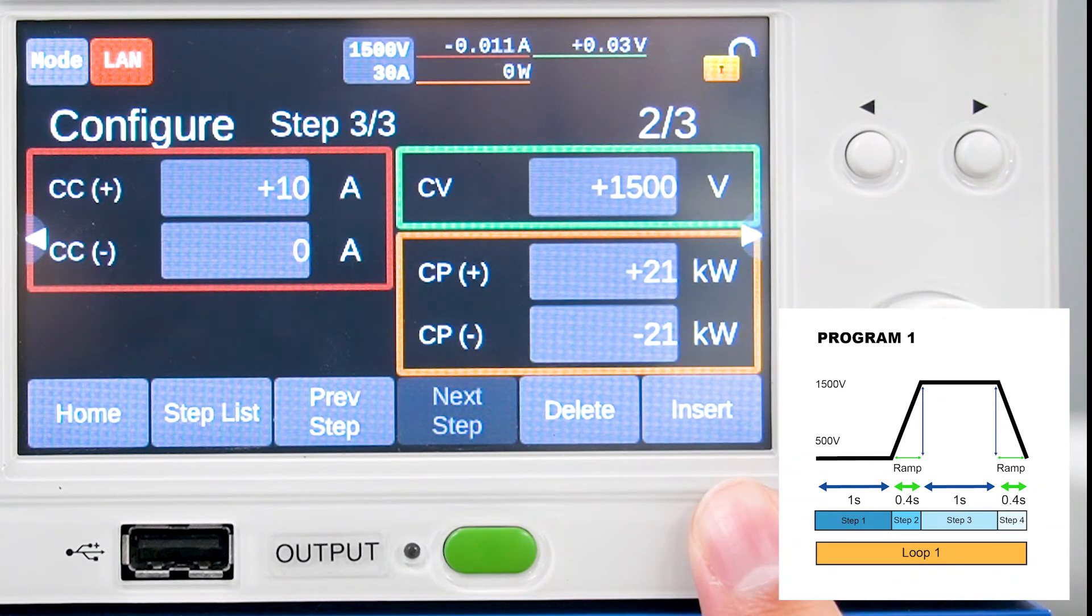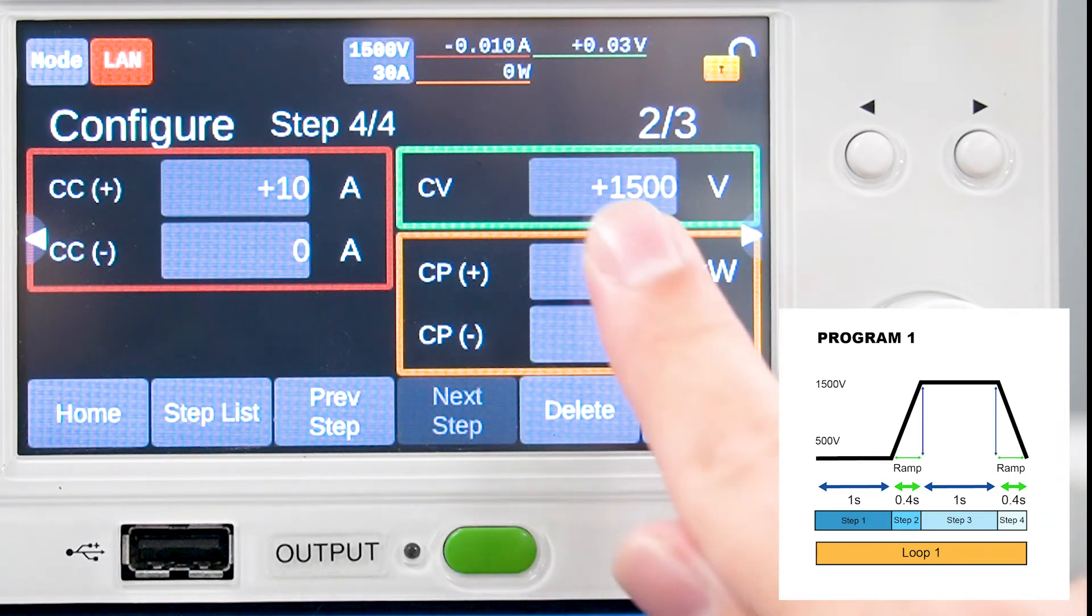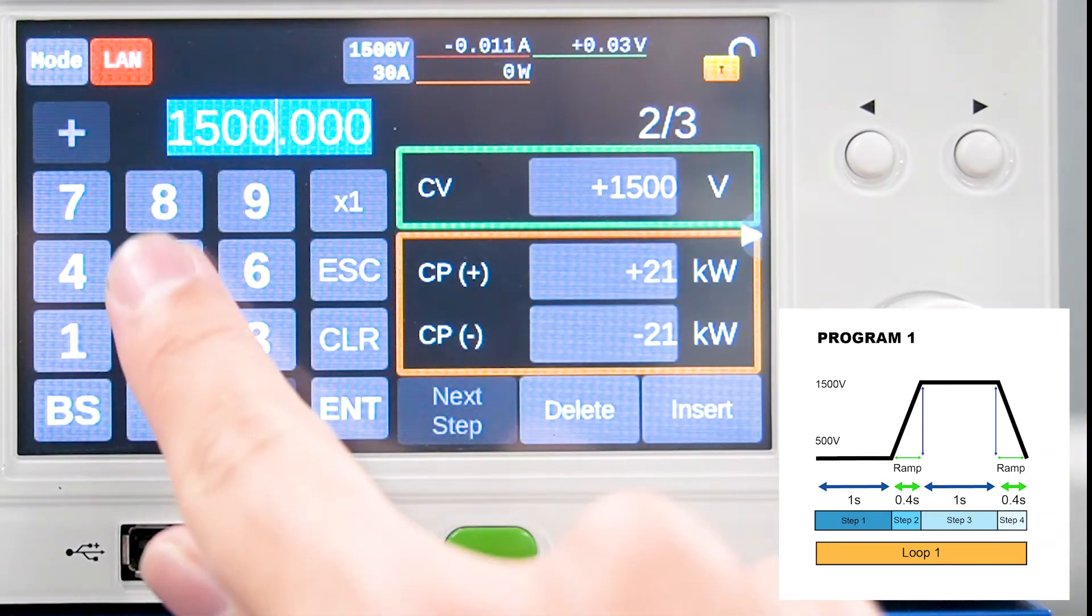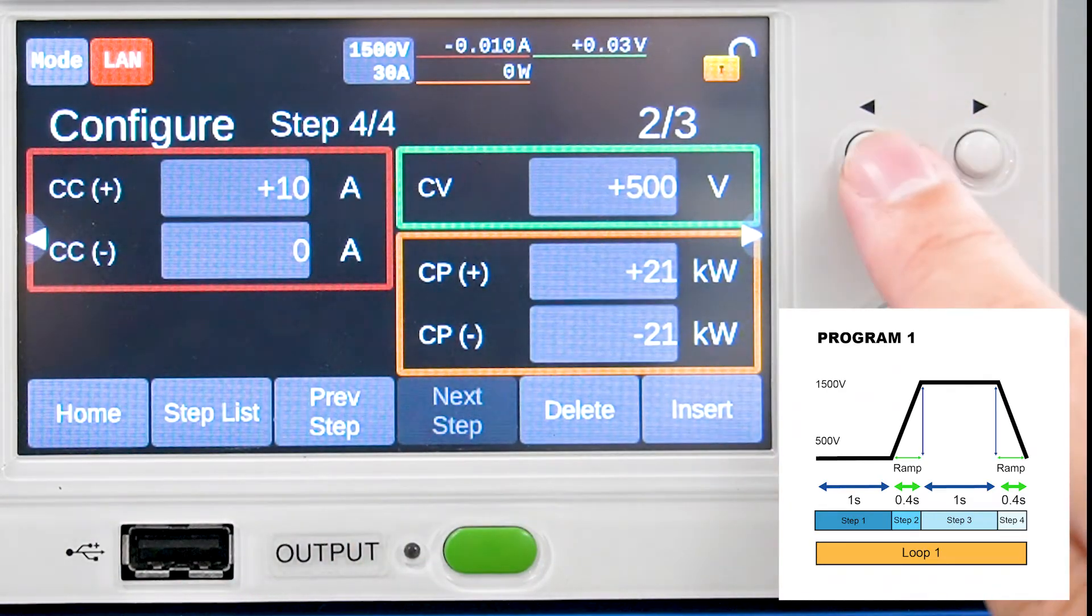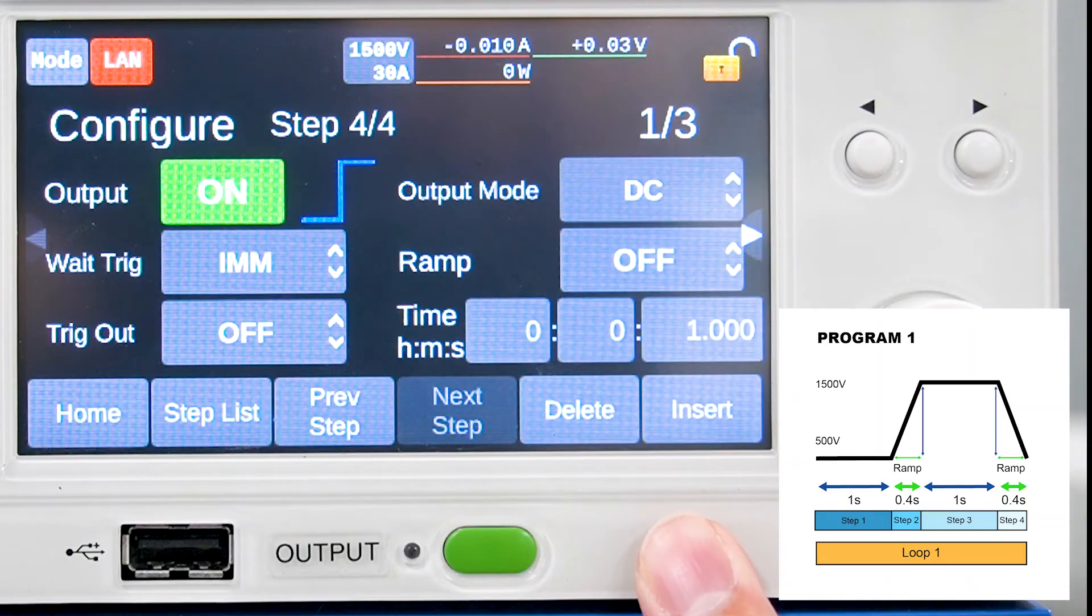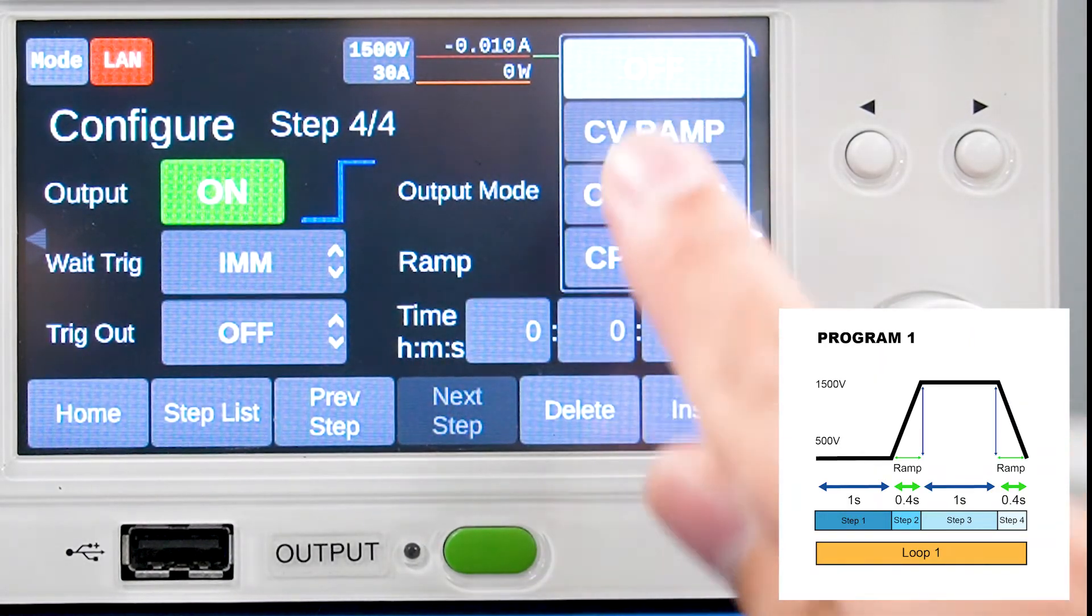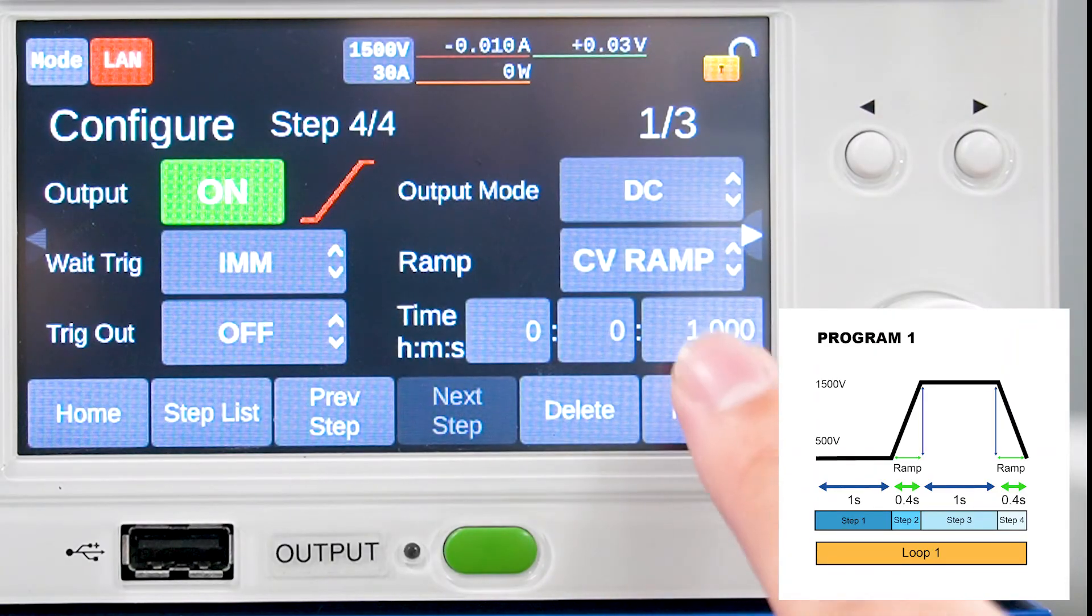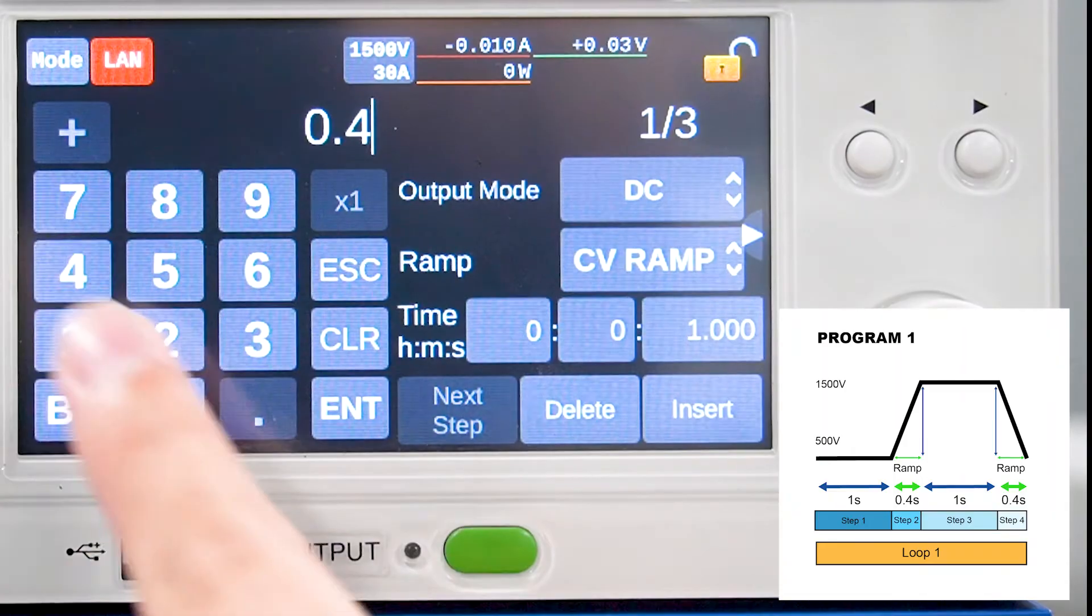Press insert to edit step 4. Lastly, we'll edit step 4. Change the voltage to 500 volts, the ramp settings to CV ramp, and the time to 0.4 seconds.